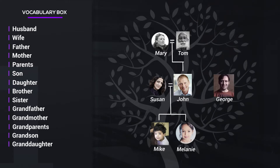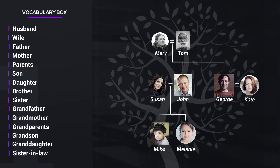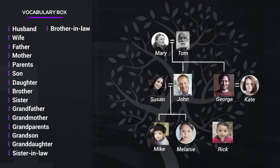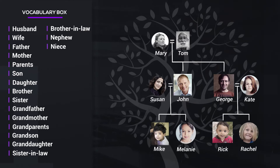This is George. George is John's brother. This is Kate. Kate is George's wife. Kate is John's sister-in-law. John is Kate's brother-in-law. Rick is George's son. Rachel is George's daughter. Rick is John's nephew. Rachel is John's niece. John is Rick and Rachel's uncle.